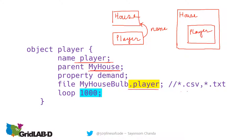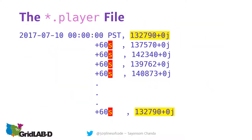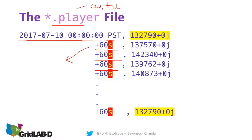A player file can be a CSV file, text file, or a dot-player file. You can run the same file any number of times using the loop command. The first thing in the player file needs to be a time, and all other entries are relative to the first timestamp. Time intervals can be hours, minutes, seconds, or days. Note that M stands for minutes here, though M usually means meters.